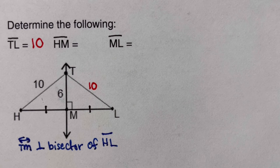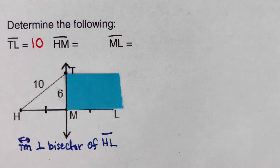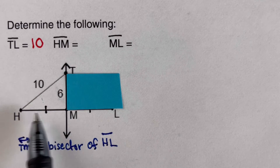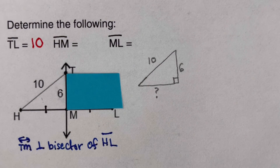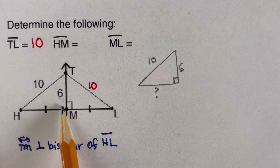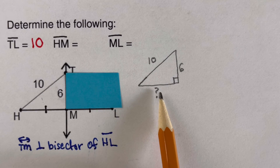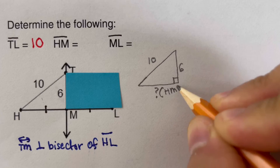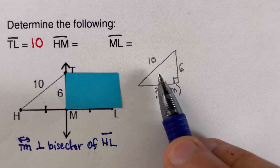Now we solve for HM. Two right triangles are formed in the figure. To avoid confusion, we focus on just the left triangle. We need to find HM using the Pythagorean theorem, where TL (the hypotenuse) is 10, and one leg (TM) is 6.